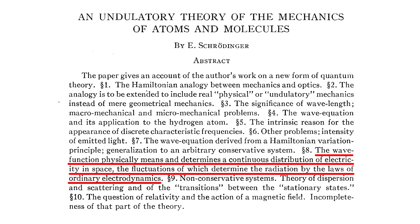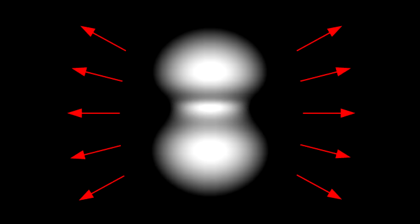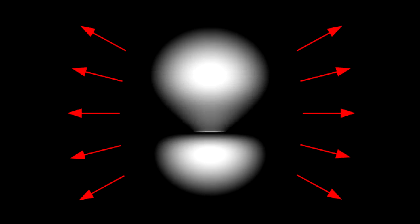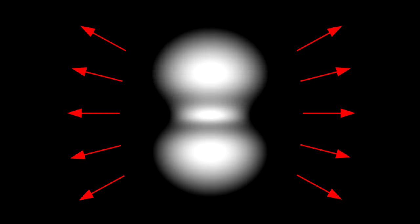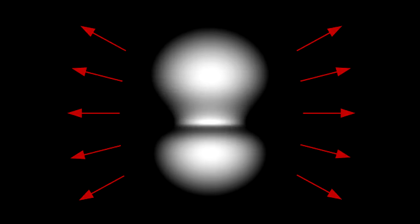Schrödinger believed that he had found a way to explain the discrete nature of emission lines without the need of quantum jumps or wave-particle duality, and the associated lack of determinism. The electron was not a particle, but a cloud of electric charge governed by the Schrödinger equation. Two states of different energy could combine to produce an oscillating charge cloud that would radiate away energy as a classical electromagnetic wave in a continuous and fully deterministic manner. The energy of the higher state would gradually be lost, and the electron would completely transition to the lower energy state.